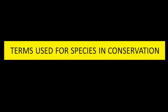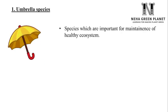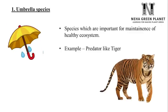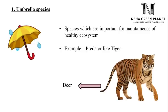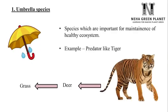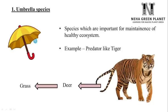Let us learn terms used for species in conservation. The first term is umbrella species. Just like an umbrella protects from rain, there are species known as umbrella species because they protect the entire ecosystem and help keep the balance of ecology. Species important for the maintenance of a healthy ecosystem are umbrella species — usually top predators like tiger. For example, if tiger is in the forest, the population of deer will be in check and thereby the population of grass will also be in balance, keeping the environment intact.